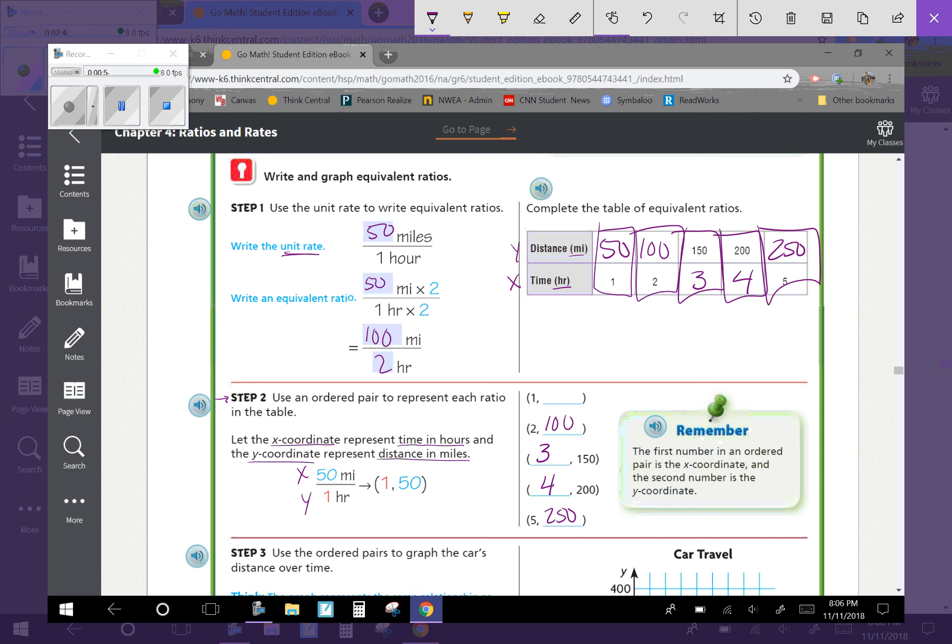So you're just rewriting the numbers that you've already computed as ordered pairs. Remember, the first number in an ordered pair is the x-coordinate, the second number is the y-coordinate.